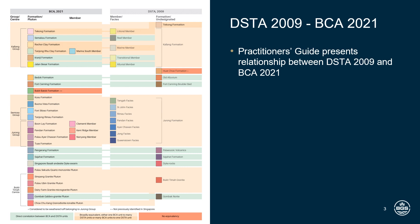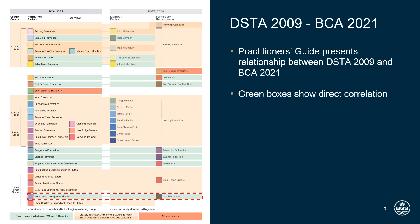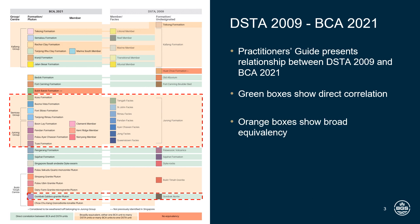The table highlights where there is relatively direct correlation — these are units shown within green boxes. For example, the Gombak Pluton in the BCA framework is linked to the Gombak Norite in the DSTA framework. Units with broad equivalency are shown in orange boxes — for example, the Sentosa group, Jurong group and Causey formation are linked to the Jurong formation. Units with no equivalency are in red boxes; for example, the Bukit Batok formation, which is a Cretaceous sedimentary unit not previously recognised in Singapore.